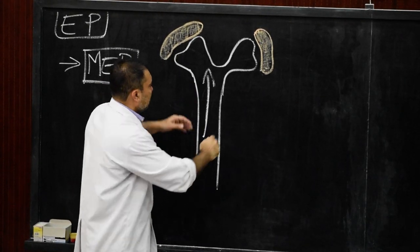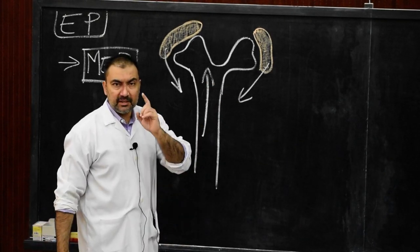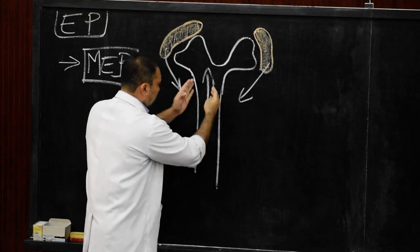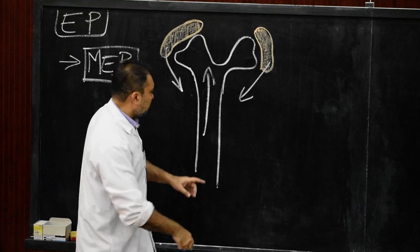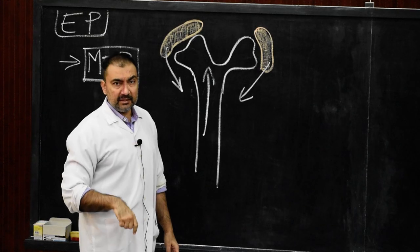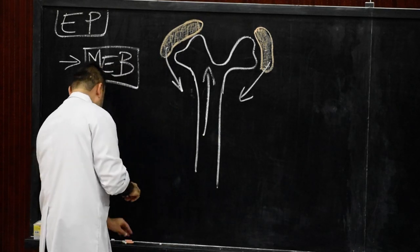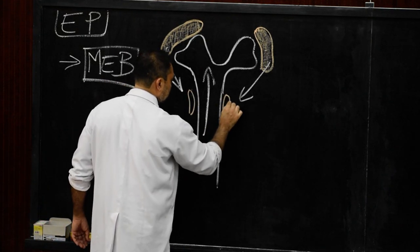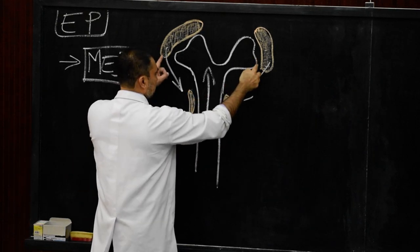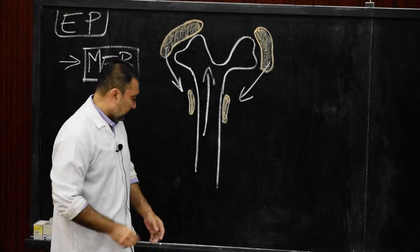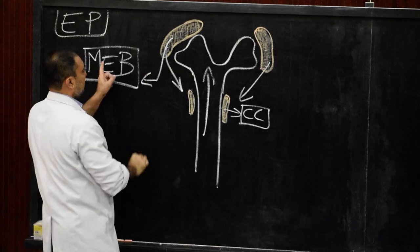In the next phase, certain cells will dissociate from the metanephric blastema and settle in the form of cell clusters on either side of the collecting tubules. As the ureteric bud keeps dividing into major calyces, minor calyces, and collecting tubules, certain cells of metanephric blastema separate and settle down as cell clusters on either side of those collecting tubules.